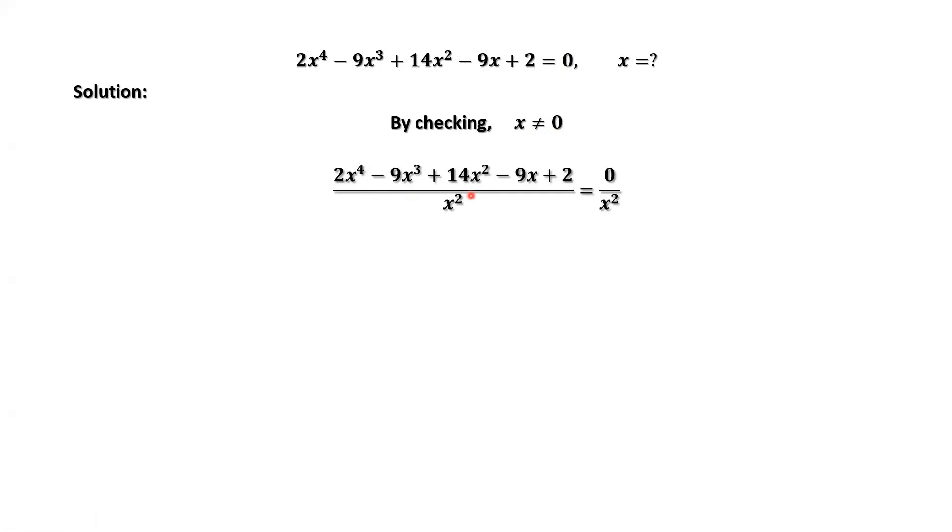Simplifying the left-hand side, we have 2x squared minus 9x plus 14x squared minus 9 over x plus 2 over x squared. The right-hand side equals 0. We group items for the left-hand side: 2 times x squared plus 1 over x squared, minus 9 times x plus 1 over x, plus 14.